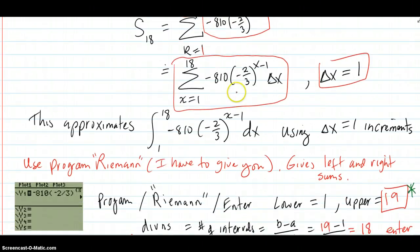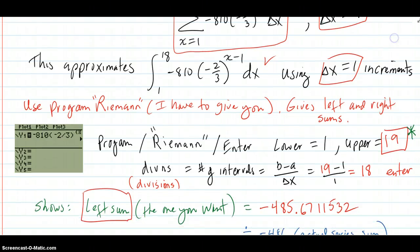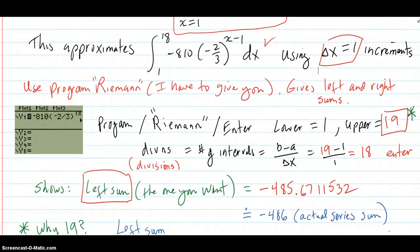So this sum approximates this integral right here. And if you use delta x equals 1 increments, you can numerically approximate that integral and get the sum that you want. So I'm going to give you a program called Riemann.